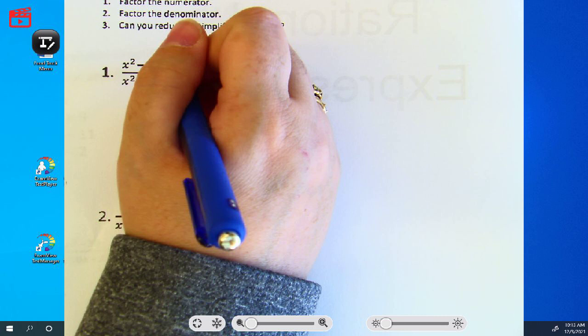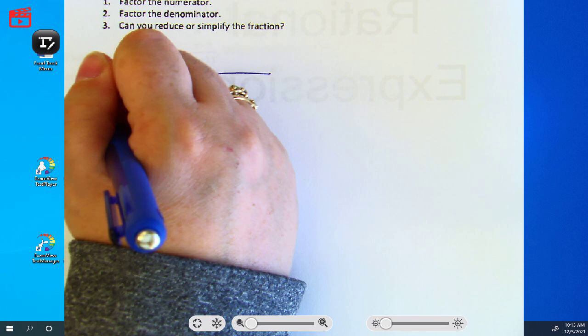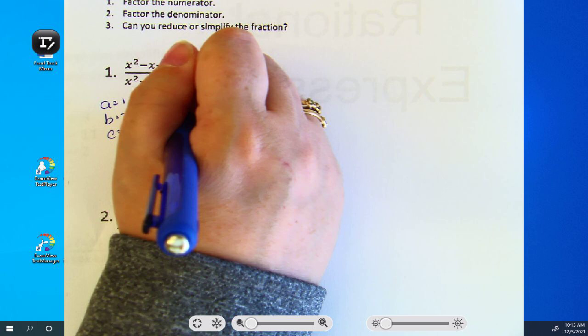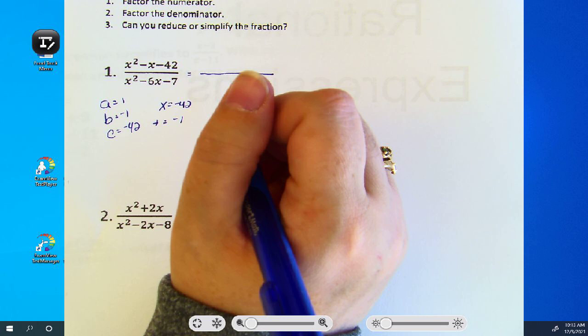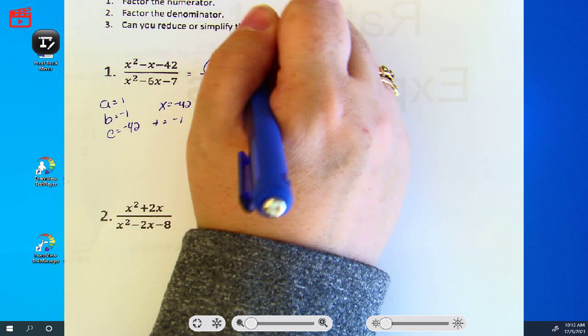So what can I... A is 1, B is negative 1, C is negative 42. What can I multiply to get negative 42, add to get negative 1? What did you get, Harley? 6 and 7. And which one has to be negative?